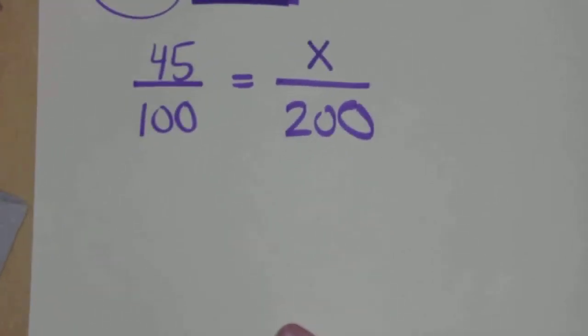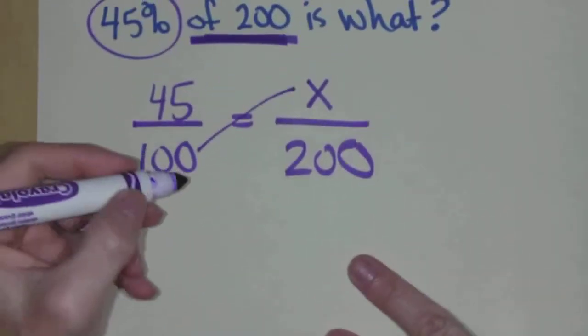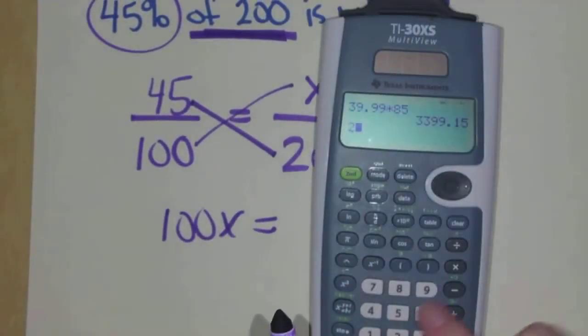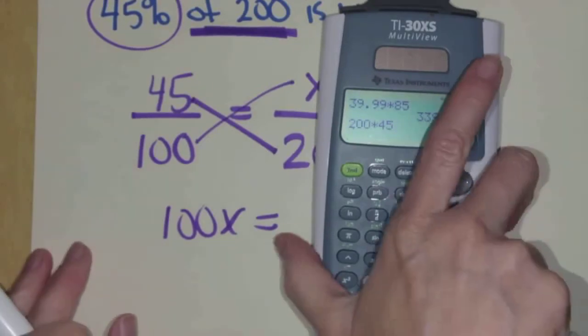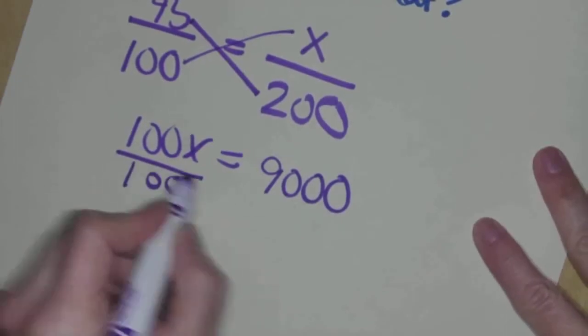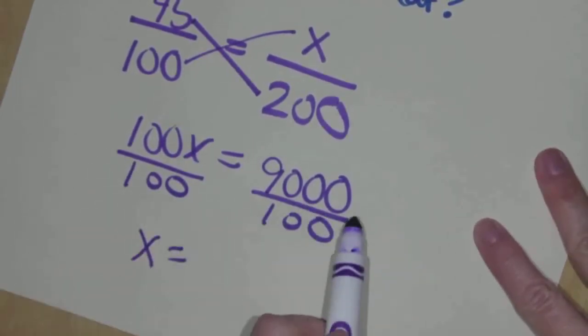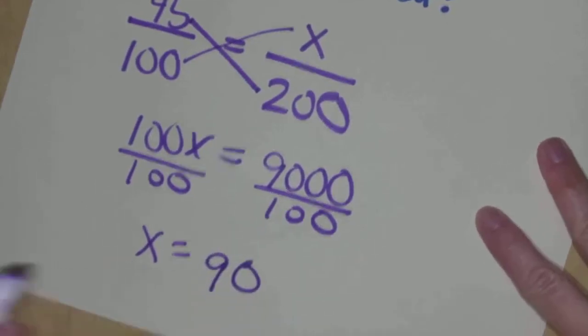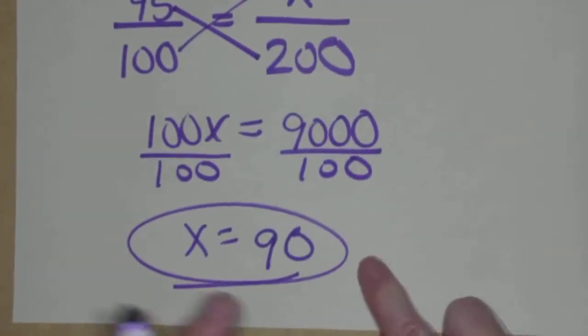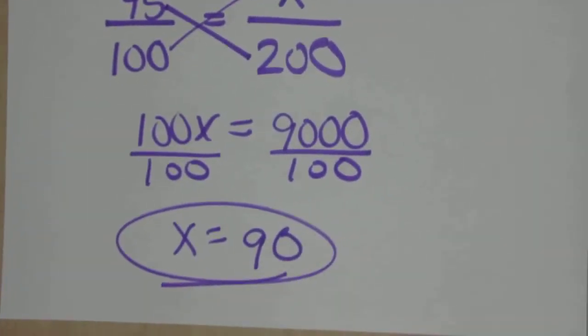I know what 50% is. 50% of 200 is 100. So I'm thinking my final answer is going to be a little bit less than 100. But let's cross multiply and see. X times 100 is 100X. 200 times 45. 200 times 45 is 9,000. Divide. So I move the decimal two to the left. So it looks like 90. So 45% out of 200 is 90. And I said it would be a little bit less than 100. Perfect. See how it always works?